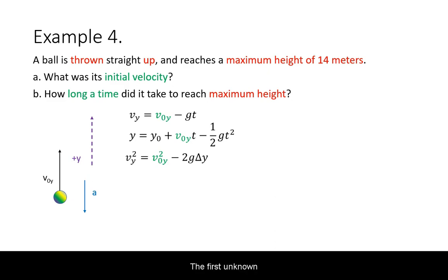The first unknown is initial velocity which is found in all of the free fall equations. So instead we pick our equation based on what else is given. We solve for the unknown and plug in with units.